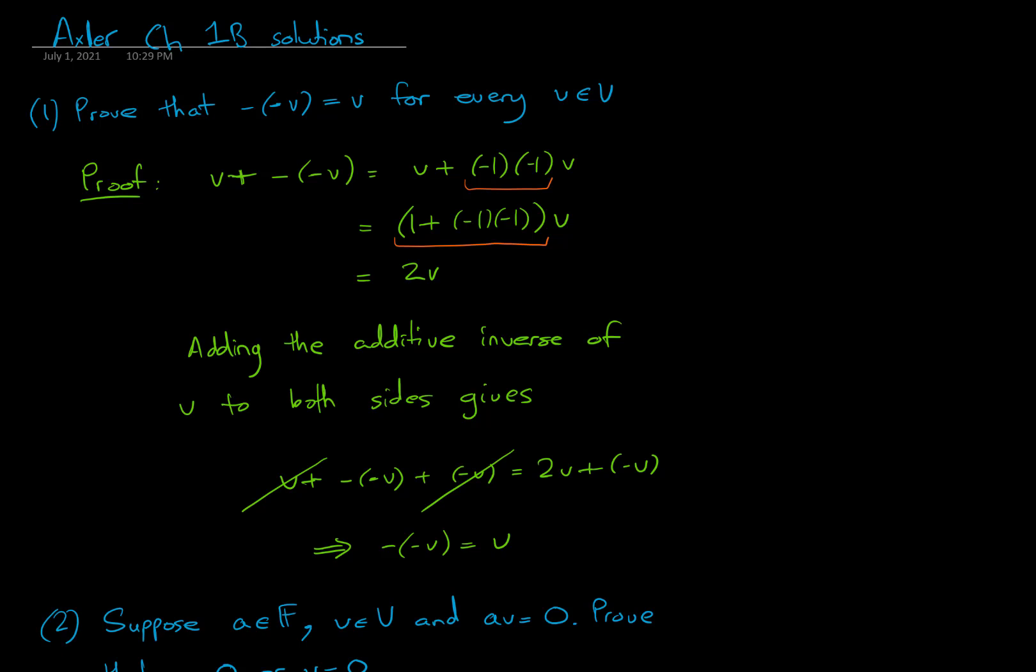Then we use the distributive property to say that it's (1 + (−1)(−1))v. But in this section of the brackets, remember those ones and minus ones come from the field of scalars, so it's okay to say well that's equal to 2v.